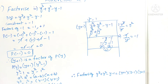Finally, the factors of the given polynomial y³ + y² - y - 1 are (y + 1)(y - 1)(y + 1). This is how we solve or find the factors of the given polynomial. Thank you for watching, students. Please subscribe to my channel, like this video, and share it with your friends.